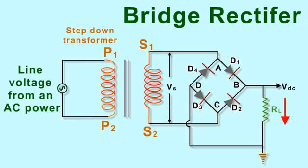During negative half cycle, the point C is positive with respect to A.